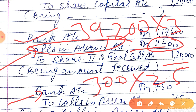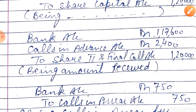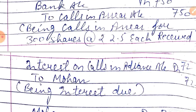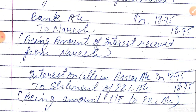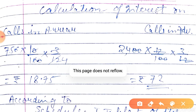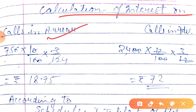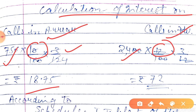Now we calculate interest on calls in arrear and calls in advance. The rate for calls in arrear is 10% and calls in advance is 12%. The amounts are ₹750 and ₹2,400 respectively, and the time period is 3 months (3 upon 12). Interest on calls in arrear is ₹18.75 and interest on calls in advance is ₹72.